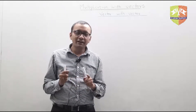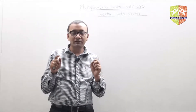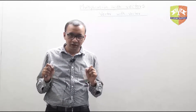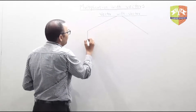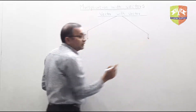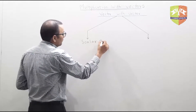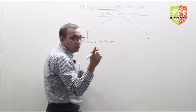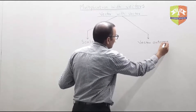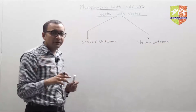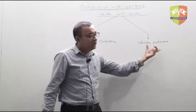So there have to be different ways you multiply vector with a vector, because only then you are getting two different results. There are two kinds of multiplication of a vector with another vector. The outcome of the first is a scalar and the outcome of the second is a vector. Based on the outcome, I will call these scalar multiplication and vector multiplication.